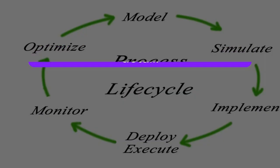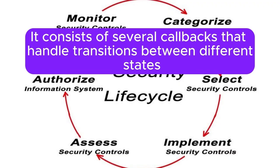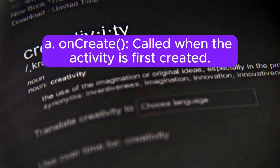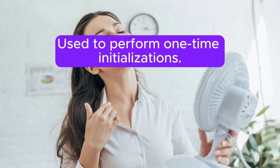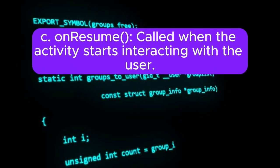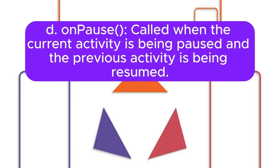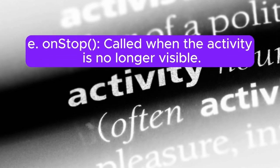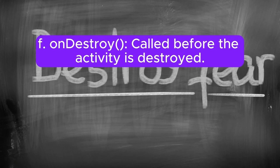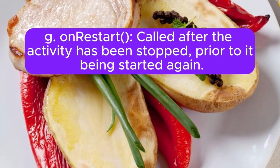Question 22: Explain the activity lifecycle in detail. The activity lifecycle consists of several callbacks handling transitions between states: OnCreate — called when the activity is first created, used for one-time initializations; OnStart — called when the activity becomes visible; OnResume — called when the activity starts interacting with the user; OnPause — called when the current activity is being paused; OnStop — called when the activity is no longer visible; OnDestroy — called before the activity is destroyed; OnRestart — called after the activity has been stopped, prior to it being started again.